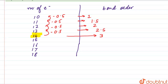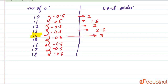Similarly, as we move up from 14 to 18, we decrease the bond order by 0.5 each step. So for 15 electrons the bond order is 2.5, for 16 it is 2, for 17 it is 1.5, and for 18 it is 1.